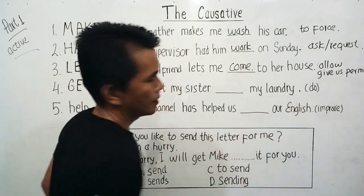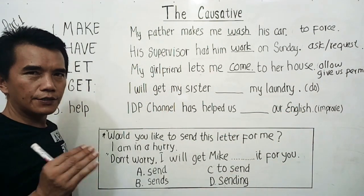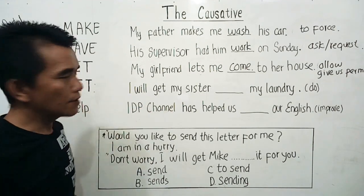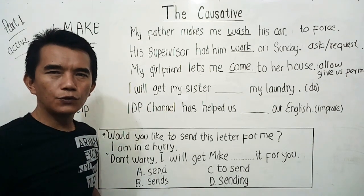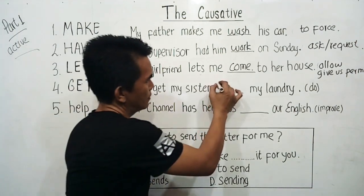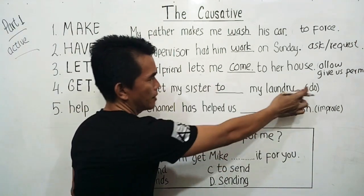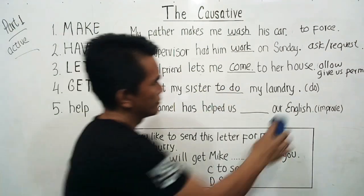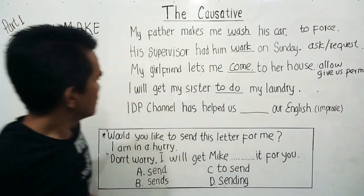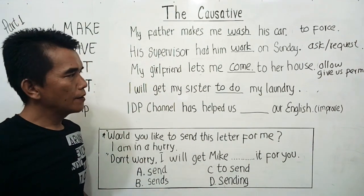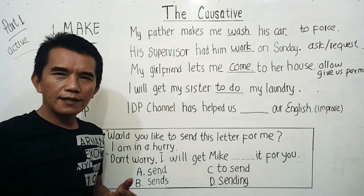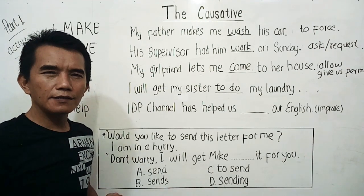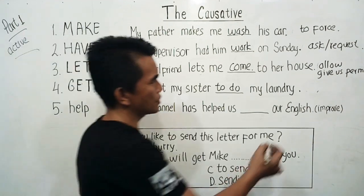When we use causative 'get' in a sentence, we have to use the infinitive — 'to' plus verb, so 'to do.' The answer is: 'I will get my sister to do my laundry.' When someone gets us to do something, it means they persuade us.